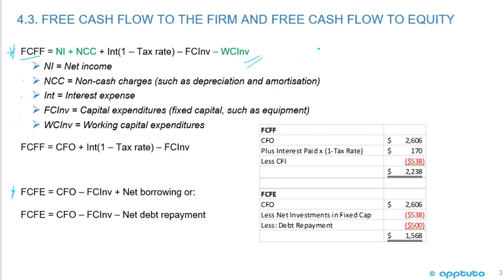Working capital expenditures are changes in balance sheet items for current assets and current liabilities — current assets minus current liabilities equals working capital. The three green items — net income, plus non-cash charges, minus working capital expenditures — equal our cash flow from operations, CFO. So you can rewrite the FCFF equation as CFO plus interest times one minus the tax rate, minus capital expenditures.